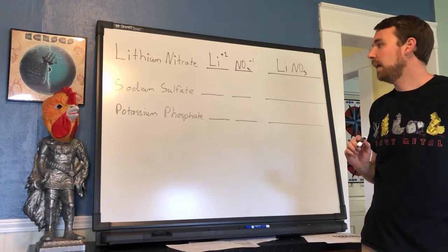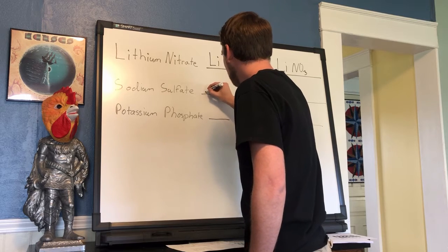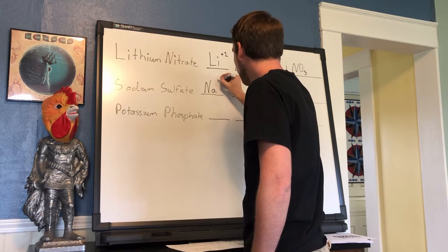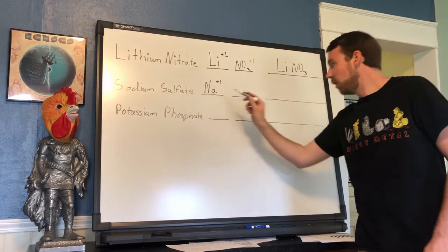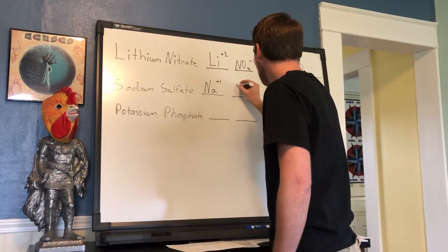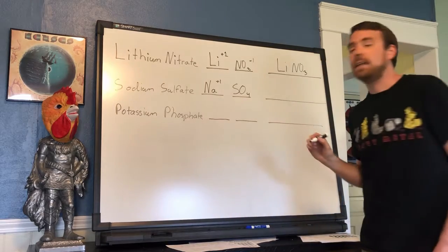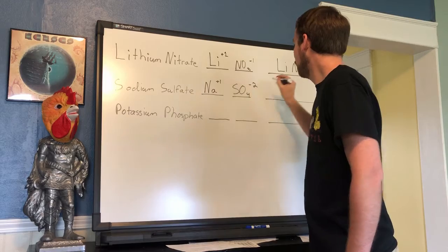Next we have sodium sulfate. The sodium ion, our cation, is Na with a charge of plus one. Then we have sulfate. Sulfate is a polyatomic ion with a formula of SO4 and a charge of minus two.